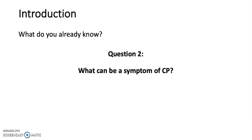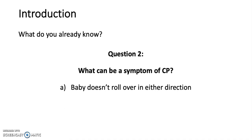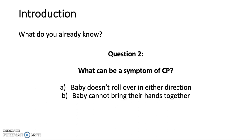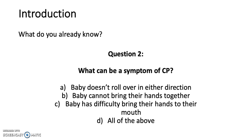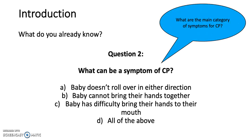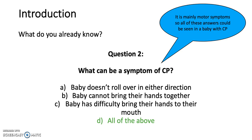Question two: What can be a symptom of cerebral palsy? A. The baby doesn't roll over in either direction. B. The baby cannot bring their hands together. C. The baby has difficulty bringing their hands to their mouth. Or D. All of the above. The answer is D, all of the above. You get mainly motor symptoms with cerebral palsy, so all of these answers could be seen in a baby with that disorder.